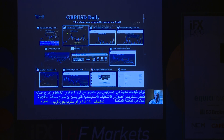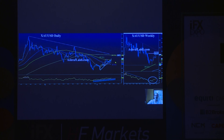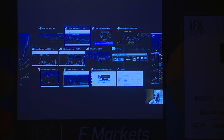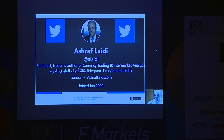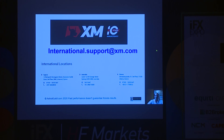On gold: before gold broke towards 1870, when we were around 1796, we broke the trendline resistance. We said the next level is 1825, and that's where we are. We hope you are enjoying the expo. If you have any questions, you can follow me on Twitter at @alidy, contact me at ashraflaidi.com, or contact us at XM International Support. Thank you very much, and enjoy the rest of your time in Dubai.